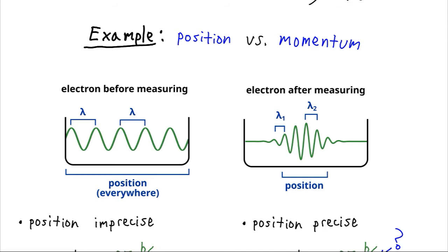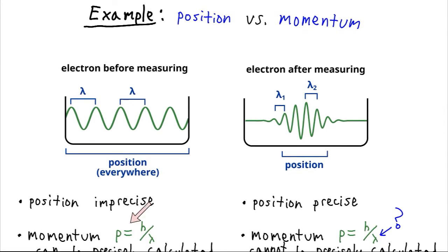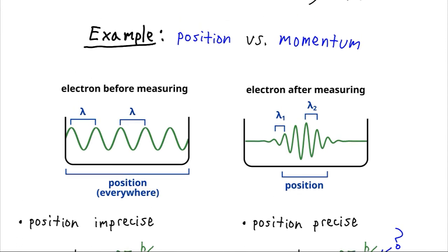Well, remember that momentum can be calculated as Planck's constant divided by the wavelength, lambda. So in this case, we can definitely get a very precise value for the momentum, because we have a very precise value for lambda. Now, what about after we measure this electron and give it a position? So now its wave shape looks more like this. It's been localized to some particular region of the box.